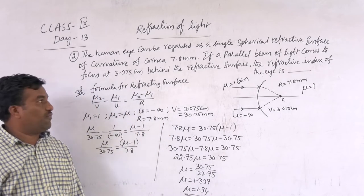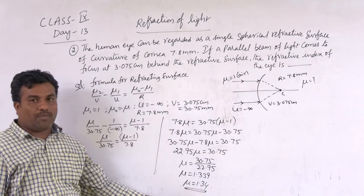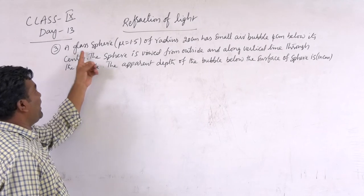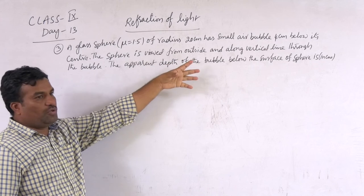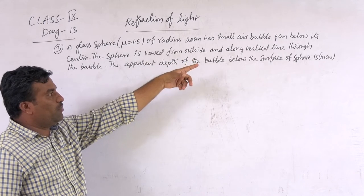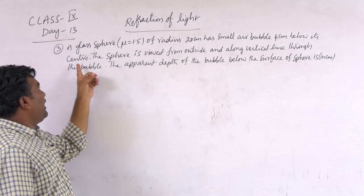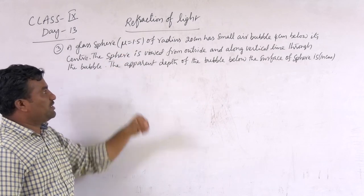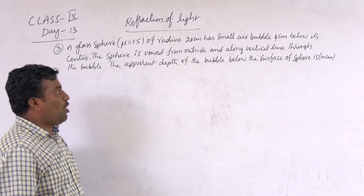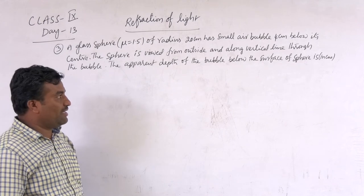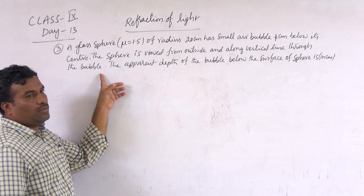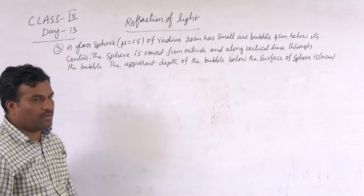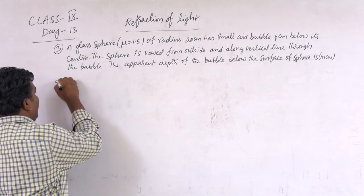So the refractive index of the eye is equal to 1.34. Next, we go with another question. A glass sphere of radius 20 cm has a small bubble 4 cm below its center. The refractive index of glass is 1.5. The sphere is viewed from outside along a vertical line through the bubble. The apparent depth of the bubble below the surface of the sphere is in cm.